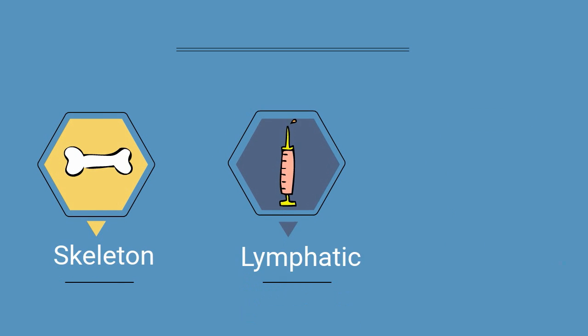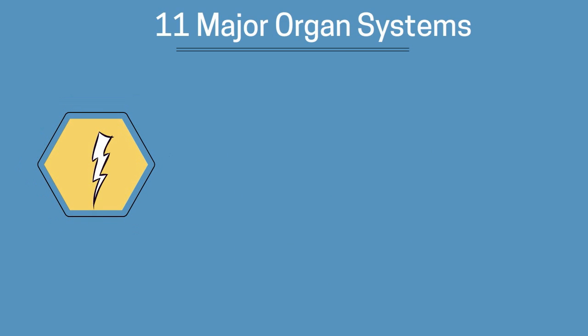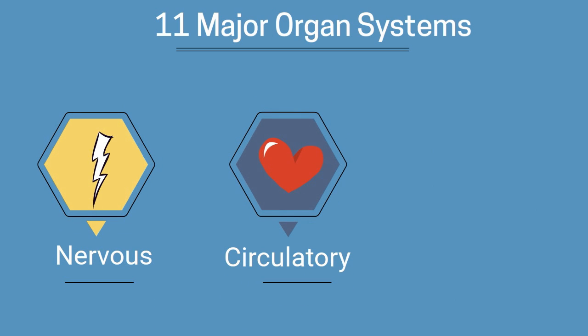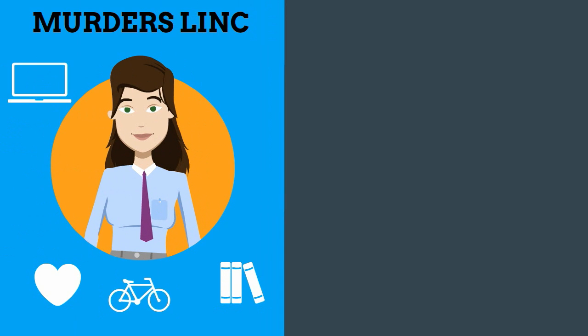The skeleton, the lymphatic, the integumentary, the nervous, and the circulatory — and there are the 11 major systems. Now let's look at two mnemonic devices to help us memorize these. You may use cardiovascular for circulatory and skeletal for skeleton.